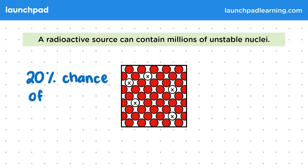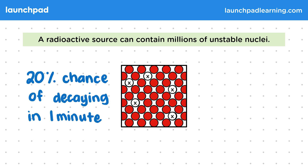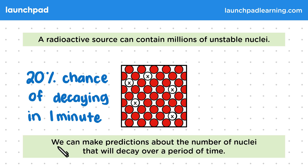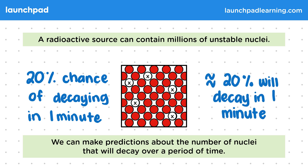For example, there might be a 20% chance of a nucleus decaying in a one-minute period. Looking at the coin experiment, each coin has a 50% chance of decaying per toss. So we can make predictions about the number of nuclei that will decay over a period of time — roughly 20% will decay in a one-minute period if each has a 20% chance. In the coin experiment, the more coins we use, the more likely around 50% will decay per toss, so we would see roughly 50% of the coins decaying each time.